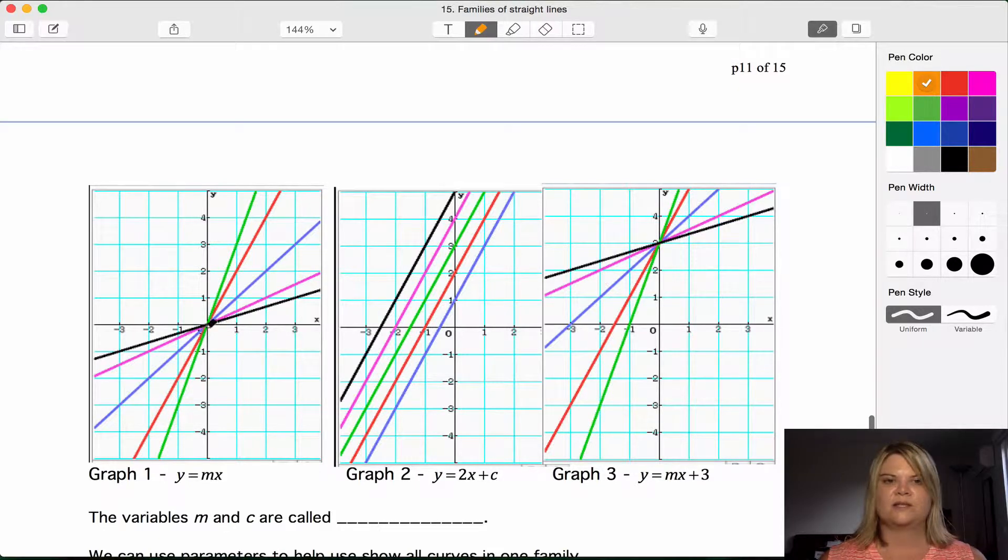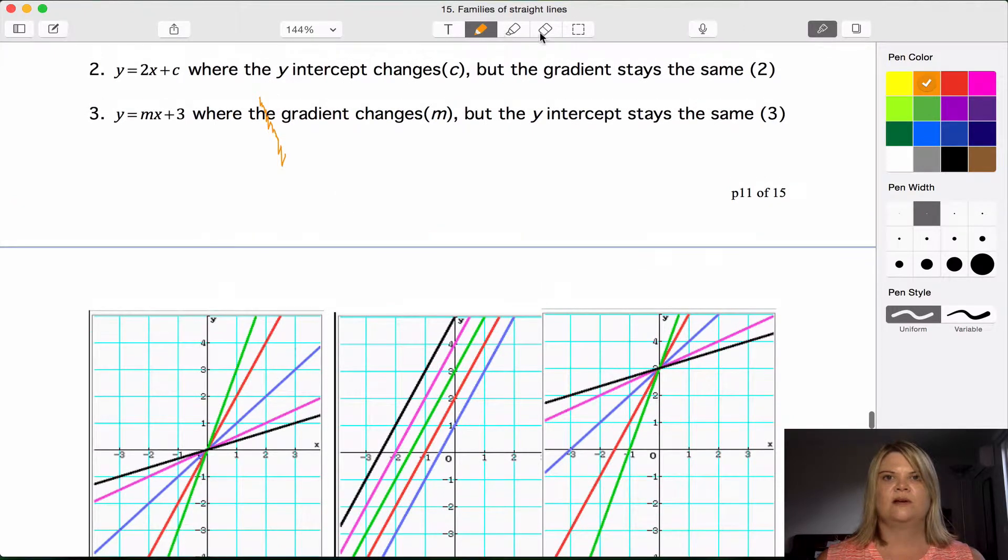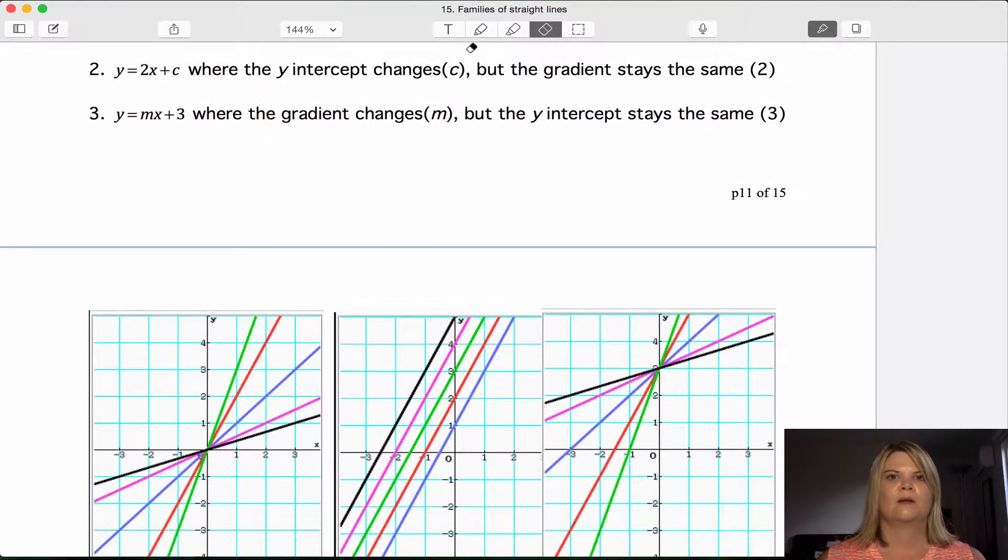The y intercept stays at zero, so all of them will go through zero, but they'll have differing gradients depending on what the value of m is. The second graph is the family of graphs y equals 2x plus c. So in this one the y intercept changes, it's listed as c, but the gradient will always be 2.